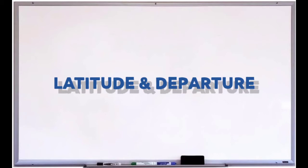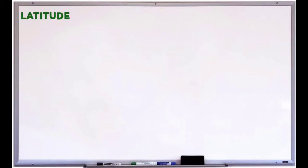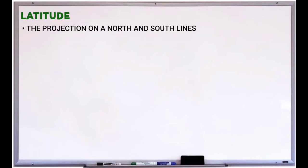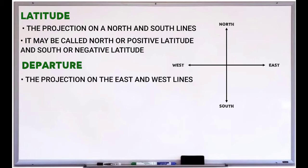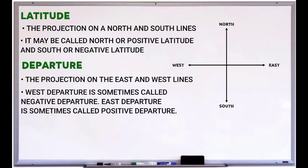Under this topic, we have latitude and departure. Latitude: the latitude of a line is the projection on the north and south lines. It may be called north or positive latitude, and south or negative latitude. Departure: the departure of a line is the projection on the east and west lines. West departure is sometimes called negative departure, and east departure is sometimes called positive departure.